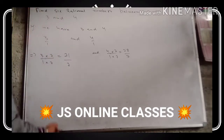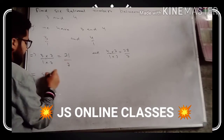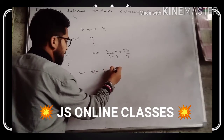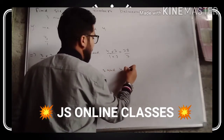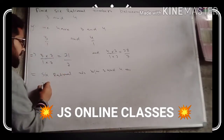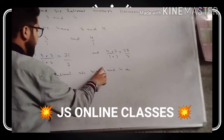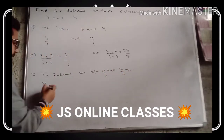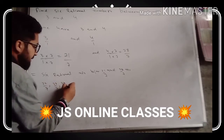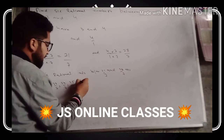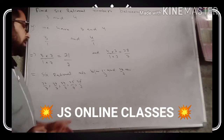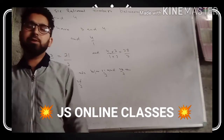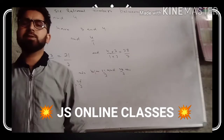The six rational numbers between three and four — that is, between twenty-one by seven and twenty-eight by seven — are: twenty-two by seven, twenty-three by seven, twenty-four by seven, twenty-five by seven, twenty-six by seven, and twenty-seven by seven. That is one, two, three, four, five, six — this is the answer. You can take a screenshot now. We can in fact find infinitely many rational numbers between any two rational numbers.